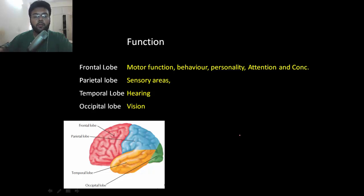Now let's check some of the important functions of the parts of the brain and begin with the frontal lobe, mainly for motor function because the primary motor area and premotor area are all located in the frontal lobe itself.